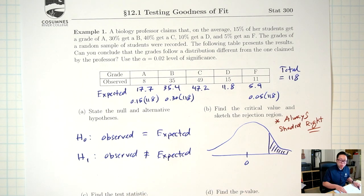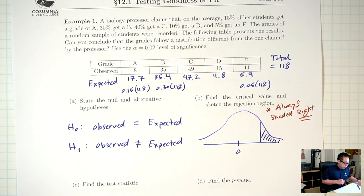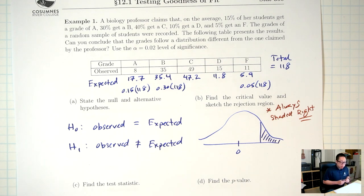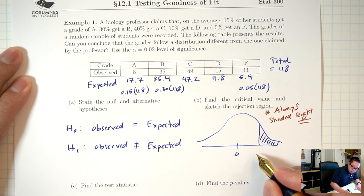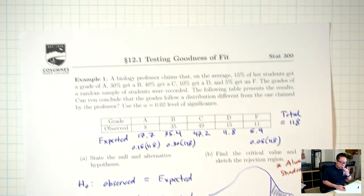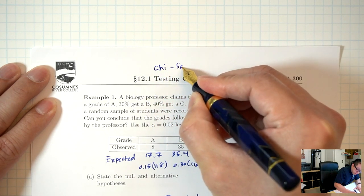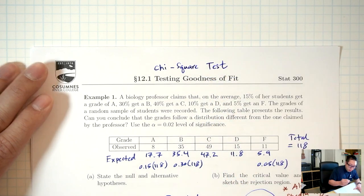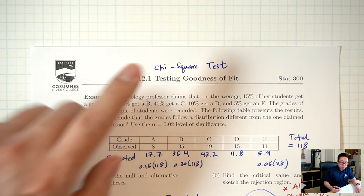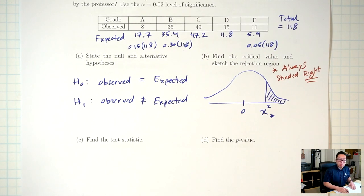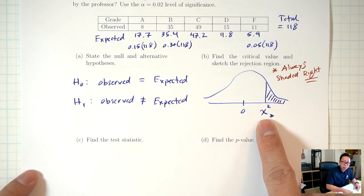In the other hypothesis tests, 'not equals' was two tails. The second difference is that instead of looking for a Z* or T*, for a goodness-of-fit test we look for a chi-square*. This is why a goodness-of-fit test is sometimes called a chi-square test. Chi is the Greek letter χ, and 'square' means we're going to square it.